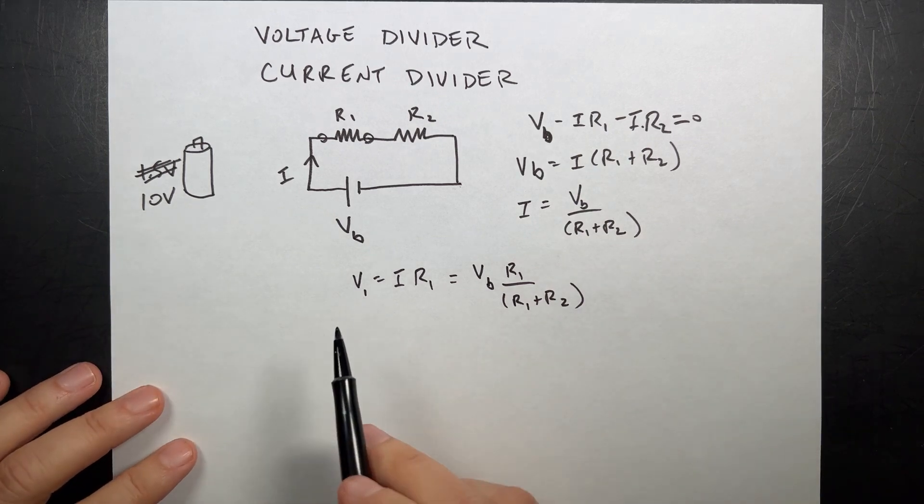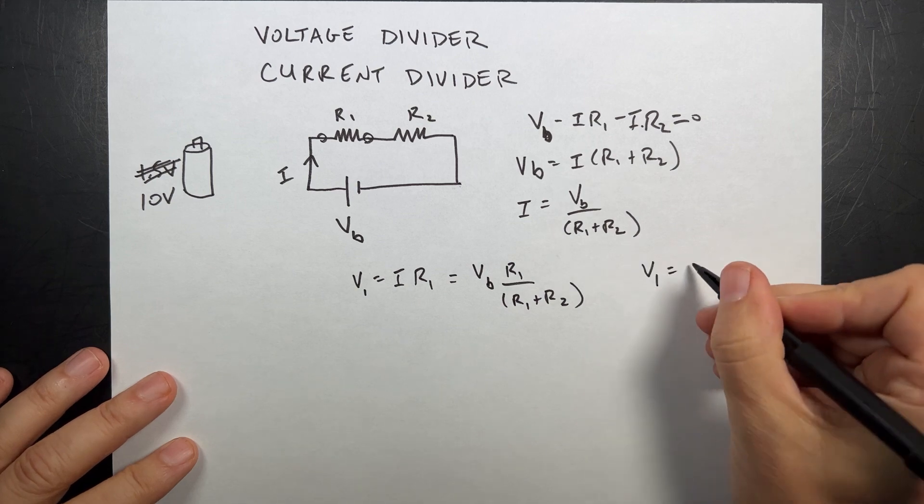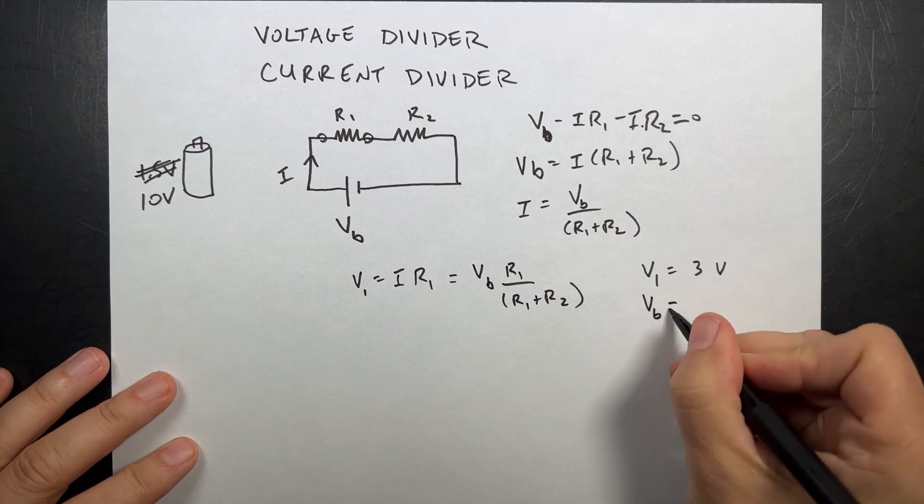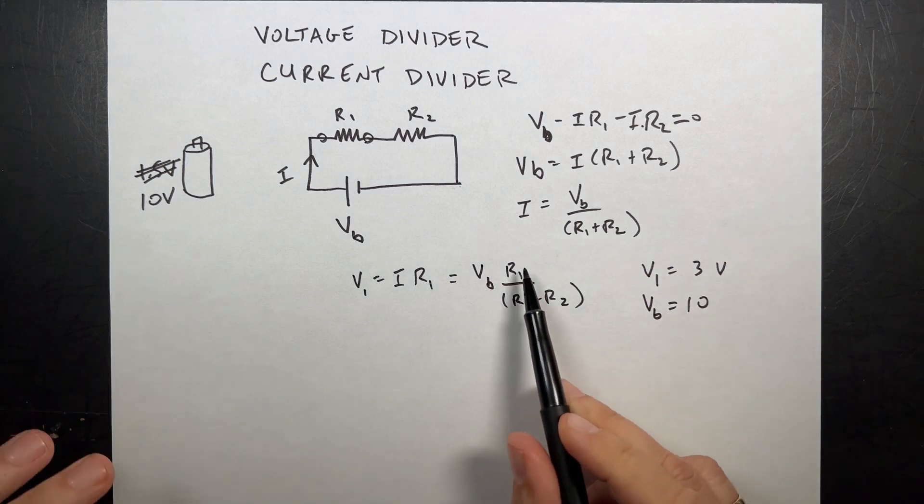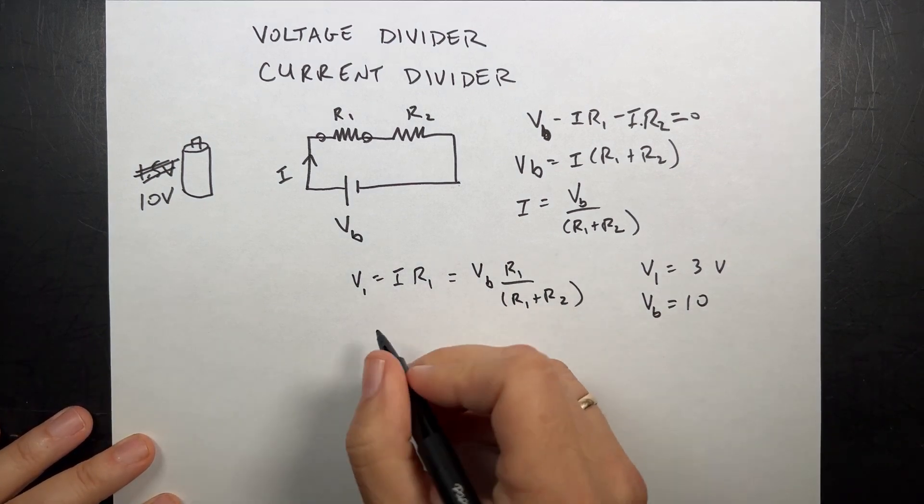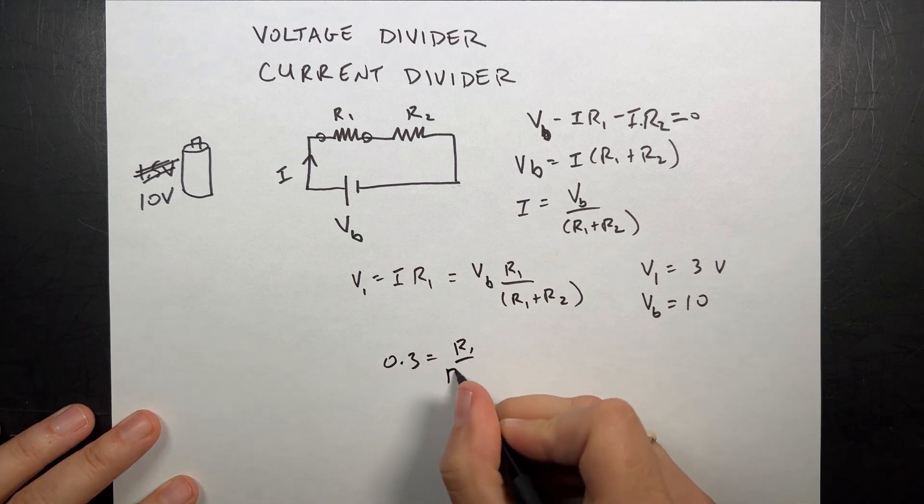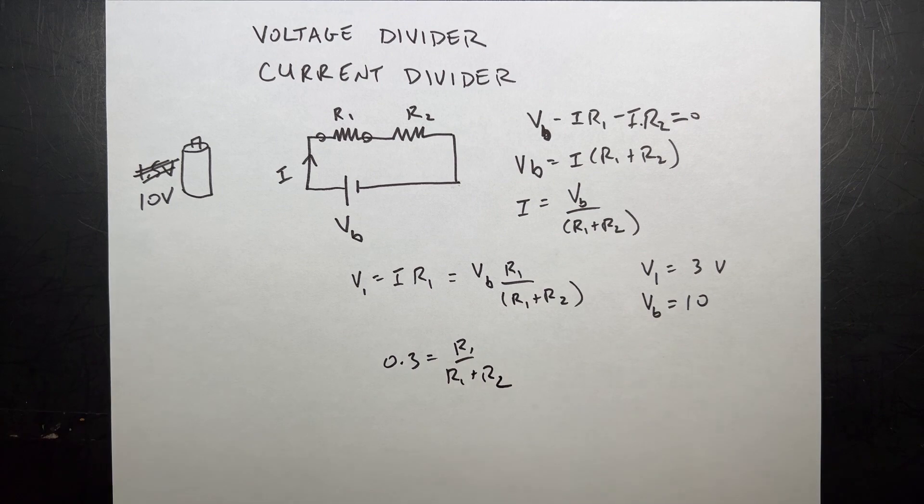So suppose I want V1 equals 3 volts, the battery is 10, then I need this to be 0.3. So I need 0.3 to be equal to R1 over R1 plus R2. Now you can pick what you want. Let's pick something easy.